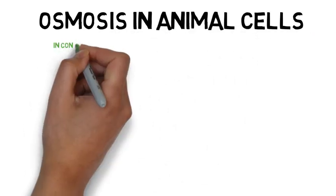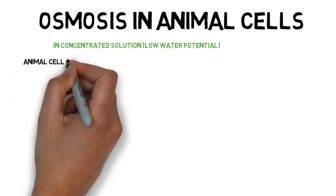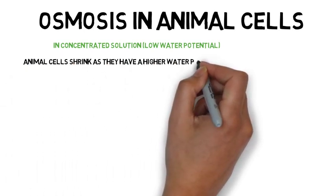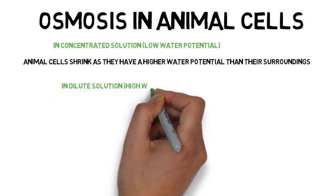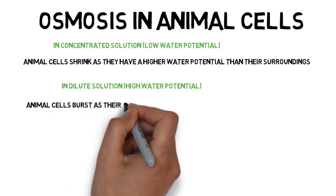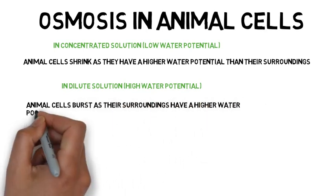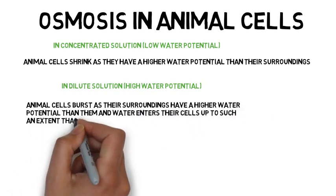In concentrated solution, low water potential, animal cells shrink as they have a higher water potential than their surroundings. In dilute solution, high water potential, animal cells burst as their surroundings have a higher water potential than them and water enters their cells up to such an extent that their cell membranes burst.